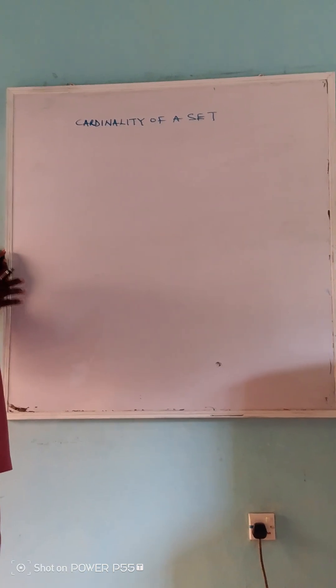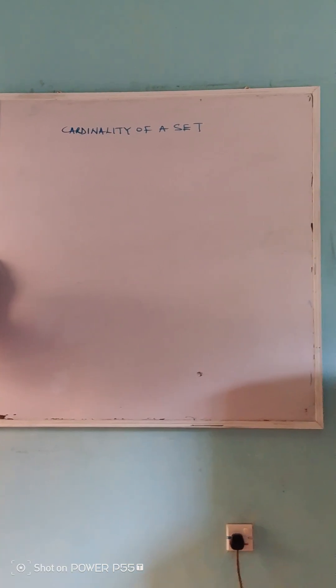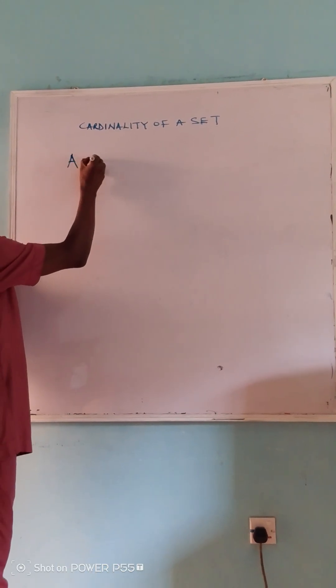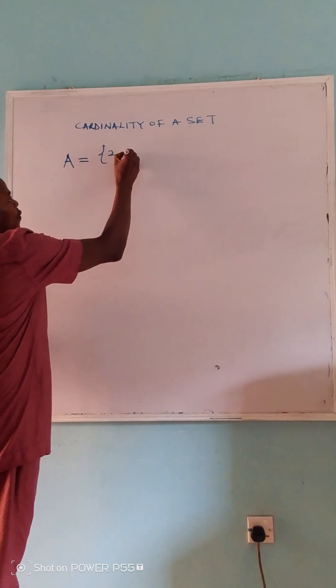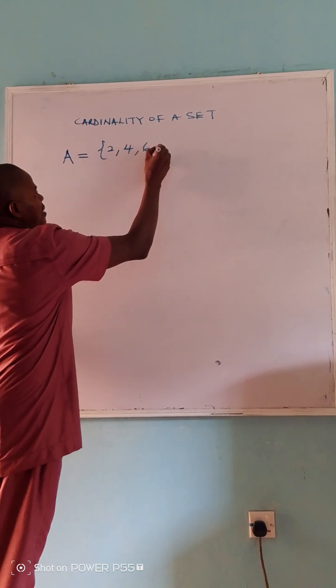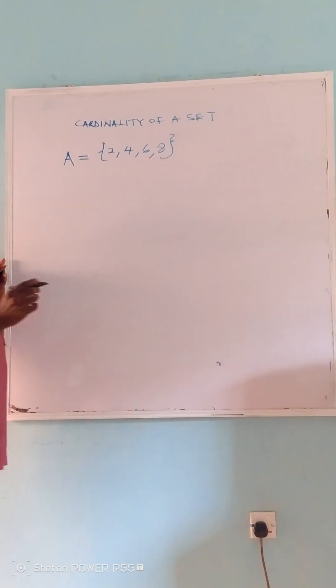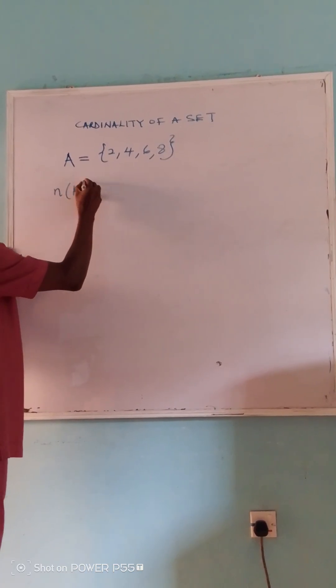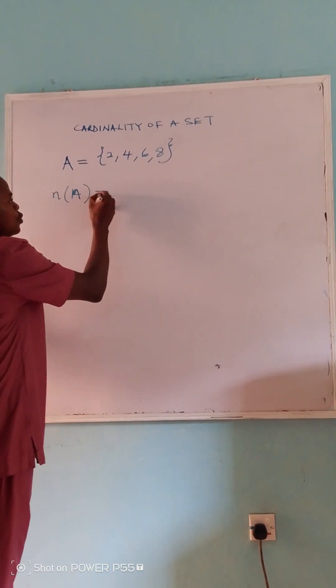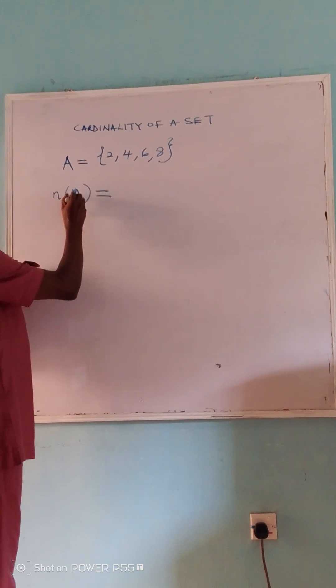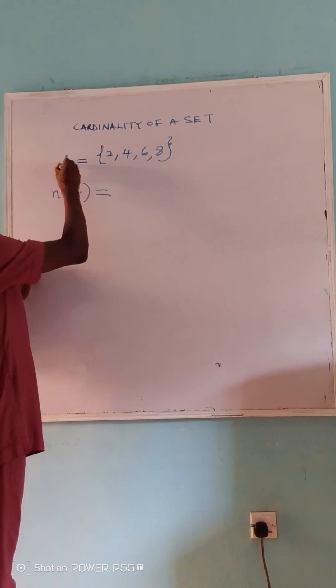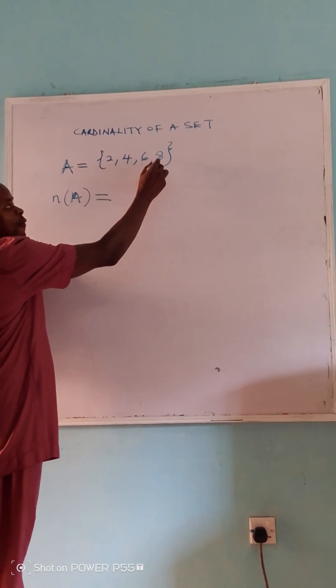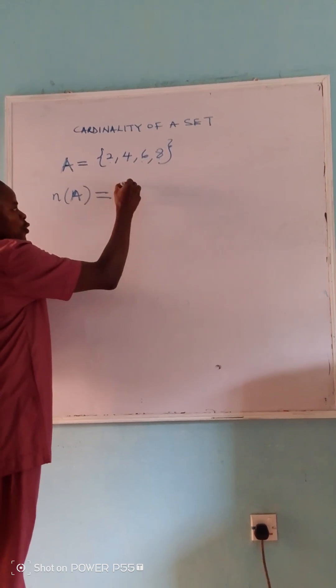Cardinality of a set means the number of elements in a set. For example, if A is equal to {2, 4, 6, 8}, cardinality of A, denoted by n(A), is equal to counting the number of elements in A. So we have 1, 2, 3, and 4 elements. So the cardinality of A is equal to 4.